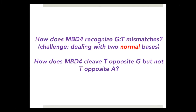Our question was: how does MBD4 recognize GT mismatches? The challenge is that you need to deal with two normal bases. Unlike uracil DNA glycosylase, which recognizes damaged bases like uracil, MBD4 must deal with two normal bases in DNA. And how does MBD4 cleave thymine opposite guanine, but not thymine opposite adenine?